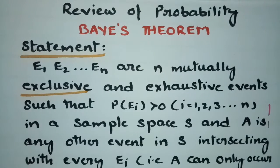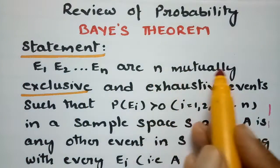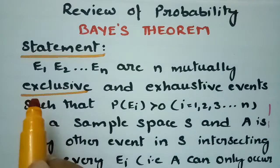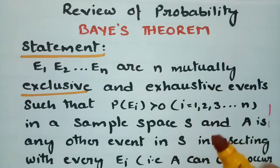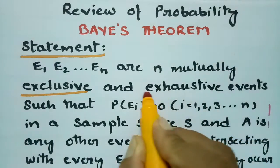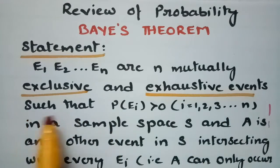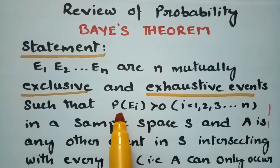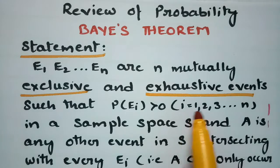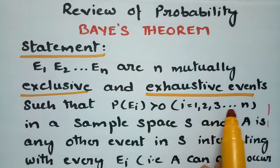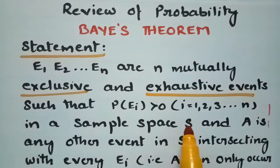The statement states that E1, E2, E3 and so on EN are mutually exclusive and exhaustive events such that the probability of EI is positive, where E1, E2, E3 and so on EN are in a sample space.